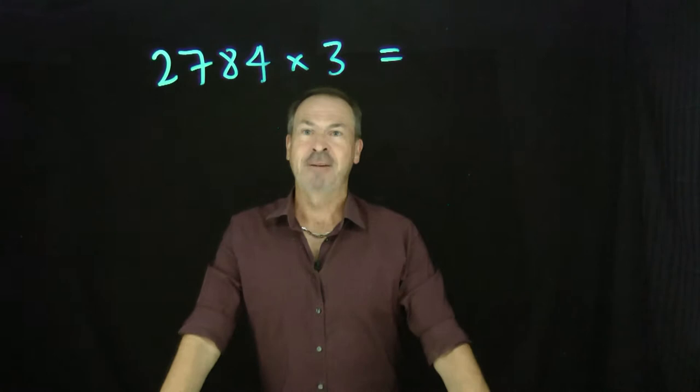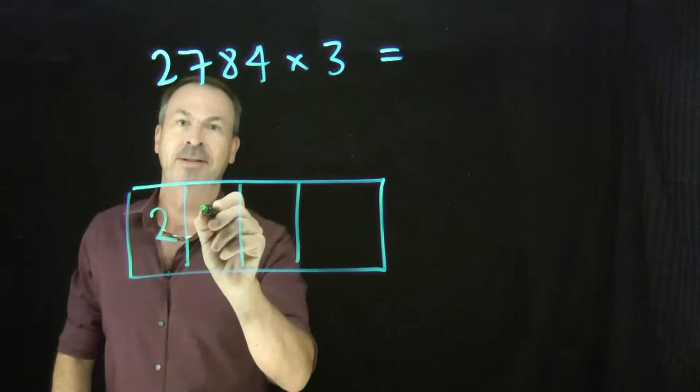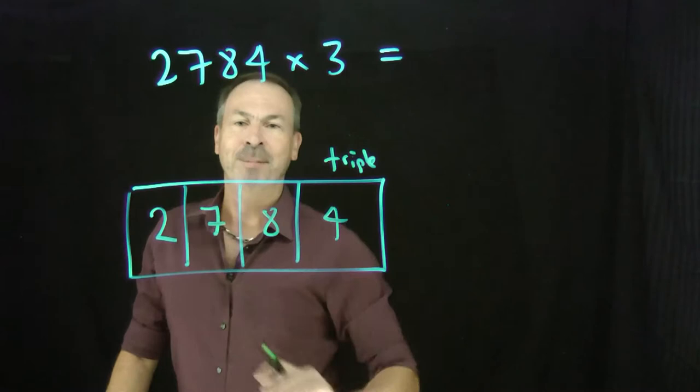Okay, let me think about this. Let me draw a picture of 2,784, so I'll need the thousands, the hundreds, the tens, and the ones. In fact, 2 thousands, 7 hundreds, 8 tens, and 4 ones, and I'm being asked to triple everything.